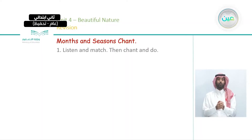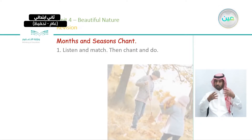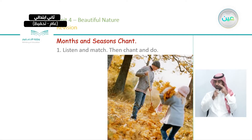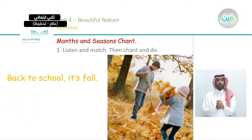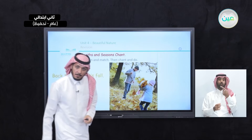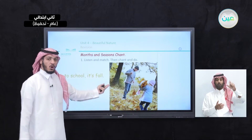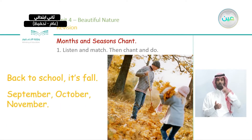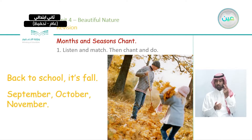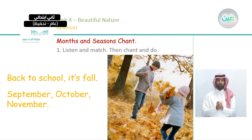Let's take the seasons one by one. The question says: listen and match, then chant and do. Can you guess which season this picture shows? Back to school — it's fall. You can also say autumn. The three months of fall are September, October, November.